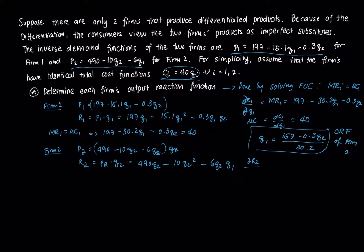If we take the derivative, ∂R2/∂Q2 equals MR2, which is 490 minus 20Q2 minus 6Q1. Our MC is just dC2/dQ2, which is 40 since they have the same cost function. Then we do MR2 equals MC2, so 490 minus 20Q2 minus 6Q1 equals 40.